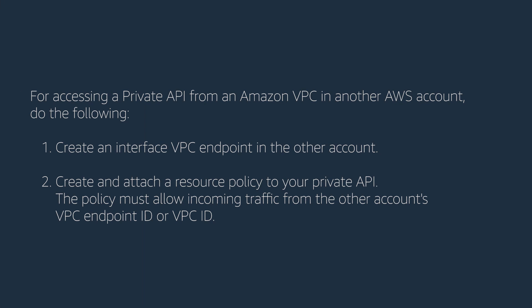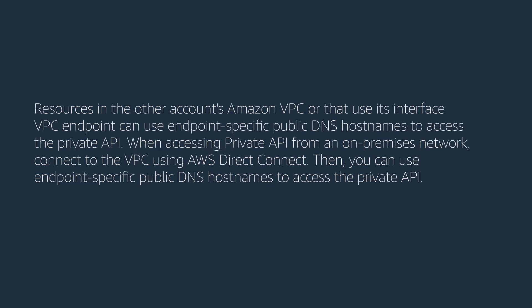For accessing a private API from an Amazon VPC in another AWS account, do the following: create an interface VPC endpoint in the other account, and create and attach a resource policy to your private API. The policy must allow incoming traffic from the other account's VPC endpoint ID or VPC ID. Resources in the other account's Amazon VPC can use endpoint-specific public DNS hostnames to access the private API. When accessing a private API from an on-premises network, connect to the VPC using AWS Direct Connect, then you can use endpoint-specific public DNS hostnames to access the private API.